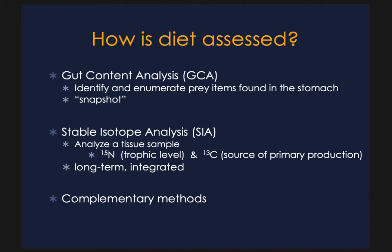How is diet assessed? In brief, there are two common methods. The first is gut content analysis, which requires identifying and enumerating prey items found in the stomach, providing a snapshot of an organism's diet on the order of hours or days. Stable isotope analysis involves analyzing a tissue sample — nitrogen to assess trophic levels, and carbon to assess the sources of primary production — providing a long-term or integrated understanding of diet on the order of weeks or months, a.k.a. you are what you eat. These complementary methods are useful in getting a well-rounded idea of an organism's diet.